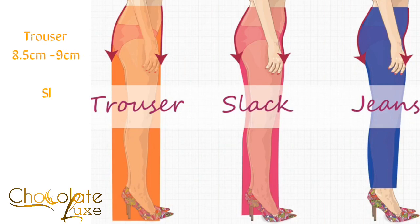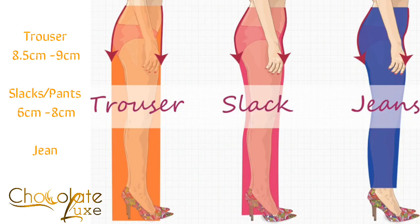The first image is a trouser and you can see that it's straight down. The second image is the slack, which is sort of a little bit pencil, and then you have the jean. By the side you can see what I've written — those are the ease that you would have on your thigh measurement.